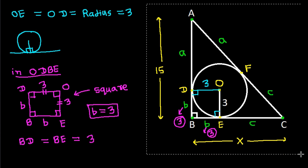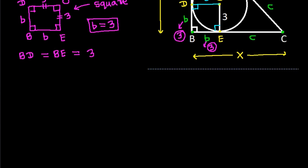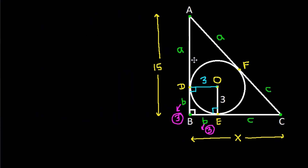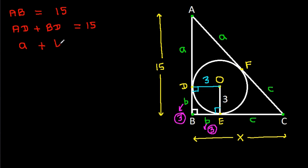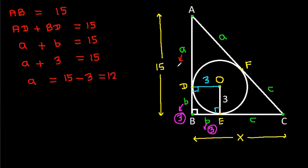Now, AB is 15, and AB equals AD plus BD. That is a plus b equals 15. Since b is 3, we get a plus 3 equals 15, so a equals 12.